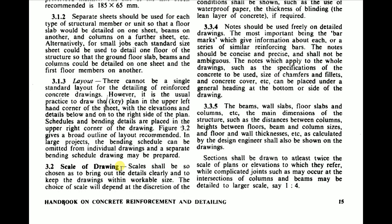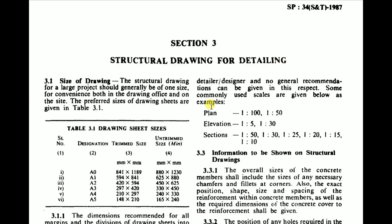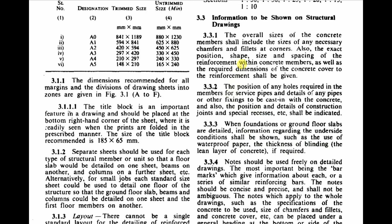In Section 3.2 we have the scale of the drawing. For plans and elevations, the standard scale is 1:100 or 1:50. For elevations the scale is 1:5 or 1:30. For sections, the scales used are 1:50, 1:30, 1:25, 1:20, 1:15, and 1:10.